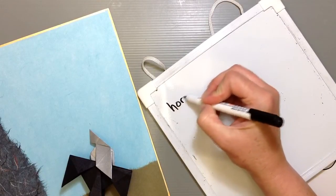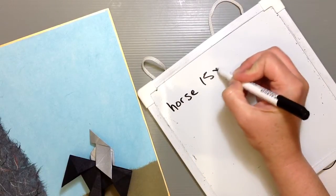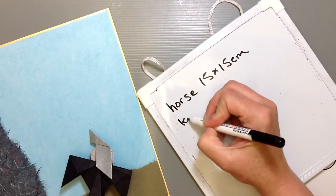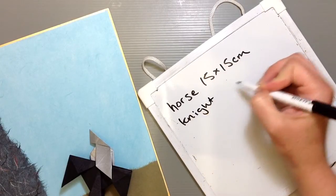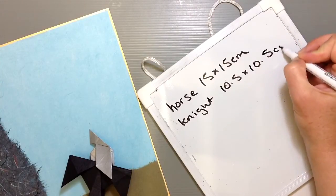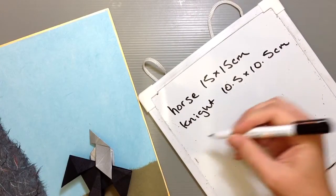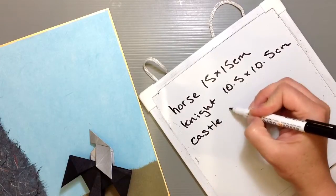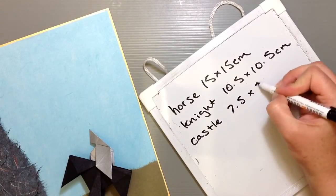For the horse you'll need paper that's 15 by 15 centimeters. For the knight, you'll need paper that is 10.5 by 10.5, if you want to make it exactly like mine. And then for my castle, I used a smaller piece of paper, 7.5 by 7.5.